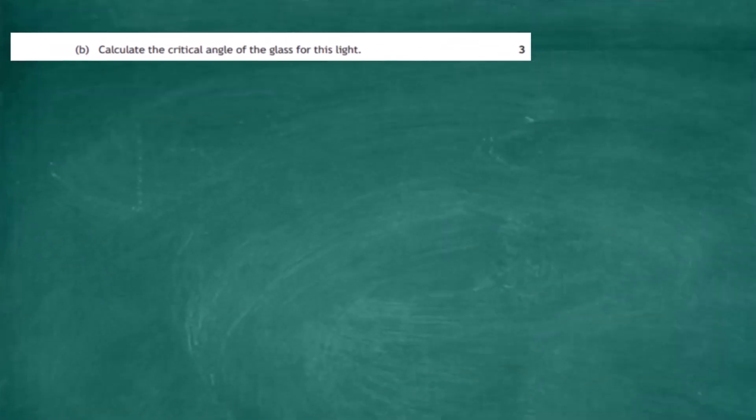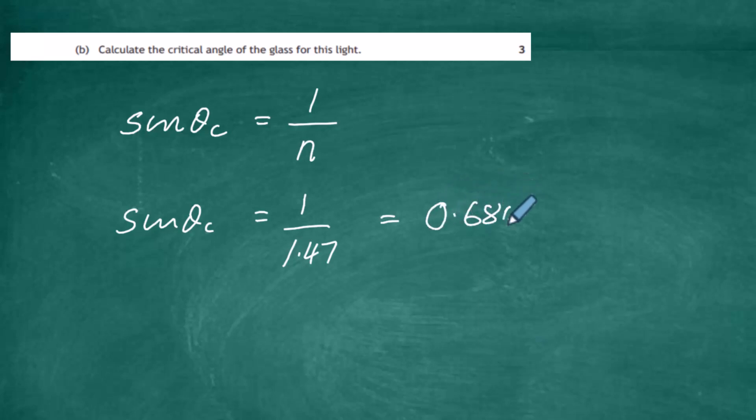Part B: Calculate the critical angle for the glass for this light. We know from our relationship sheet that the critical angle is given by this expression: sine theta critical is equal to 1 over the refractive index n. It's quite a simple job to find the critical angle. It's going to be 1 divided by 1.47, and that's going to give us an answer of 0.680. If we take the inverse of sine of 0.680 to give us theta critical, theta critical comes out to be 42.9 degrees. That's the answer for our three marks.